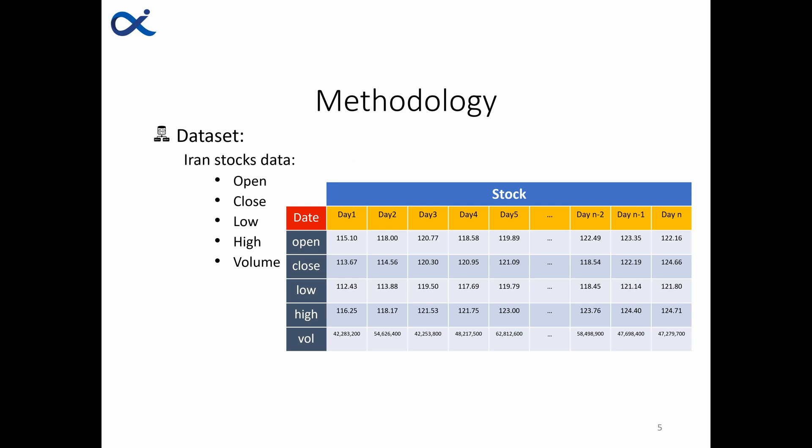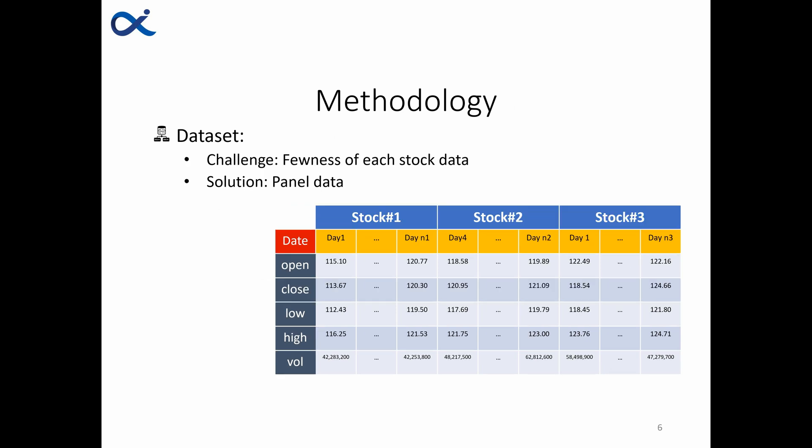For training our transformer model we are using Iran stock market data. To do so we are using open, close, low and high prices alongside volume of trade. Since transformer models have huge amount of parameters we face a new challenge, which is for a single stock market we have little amount of data.